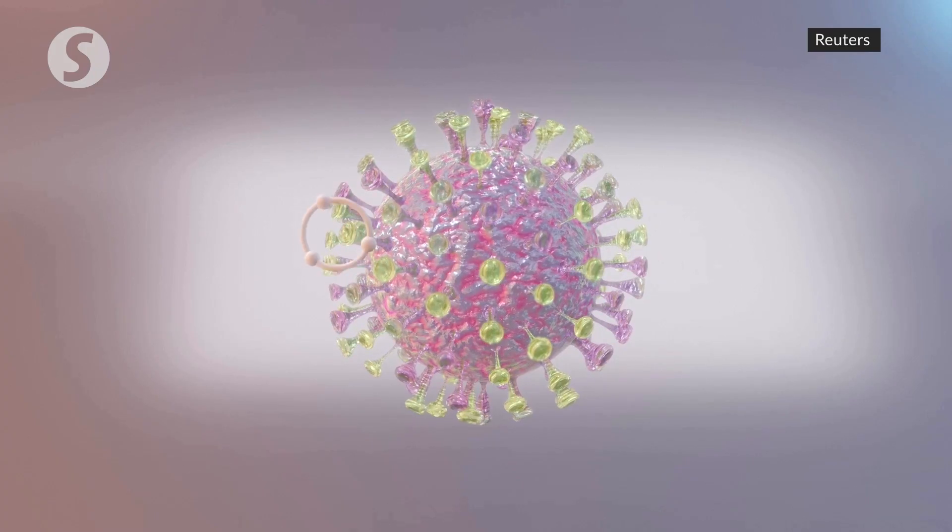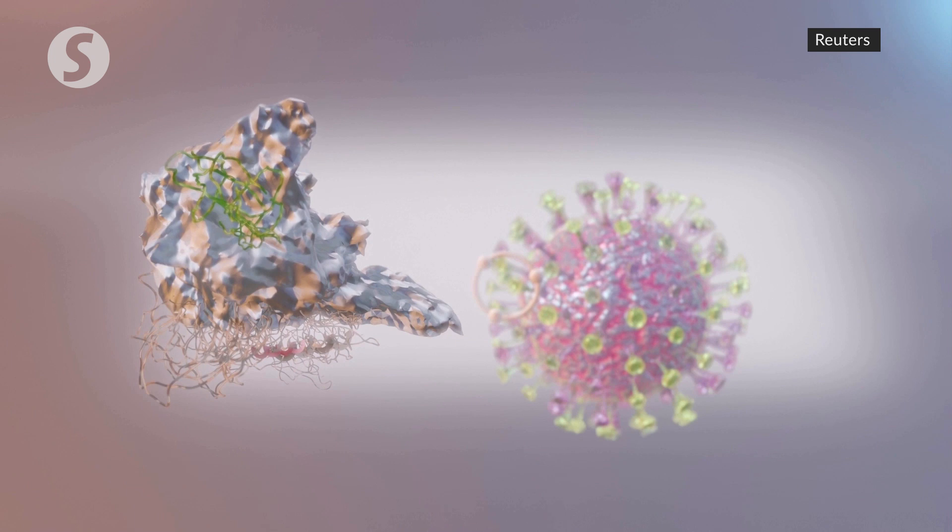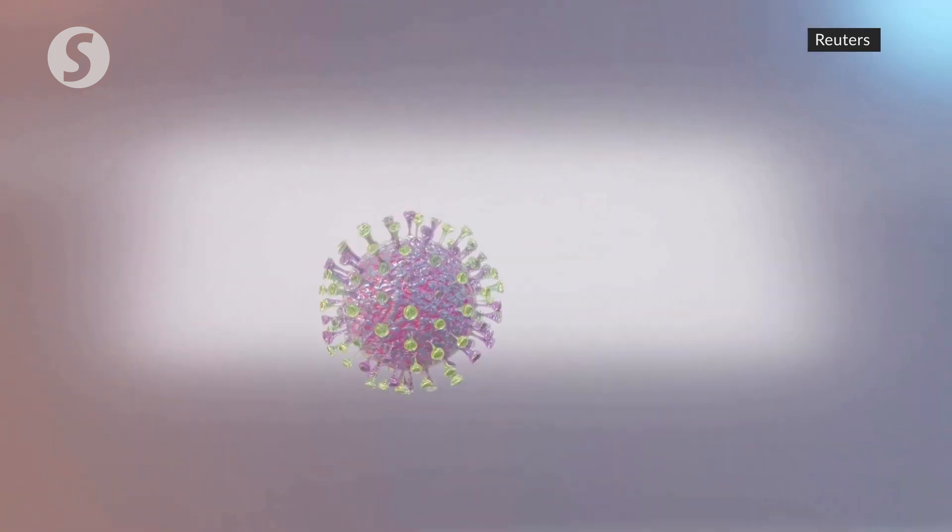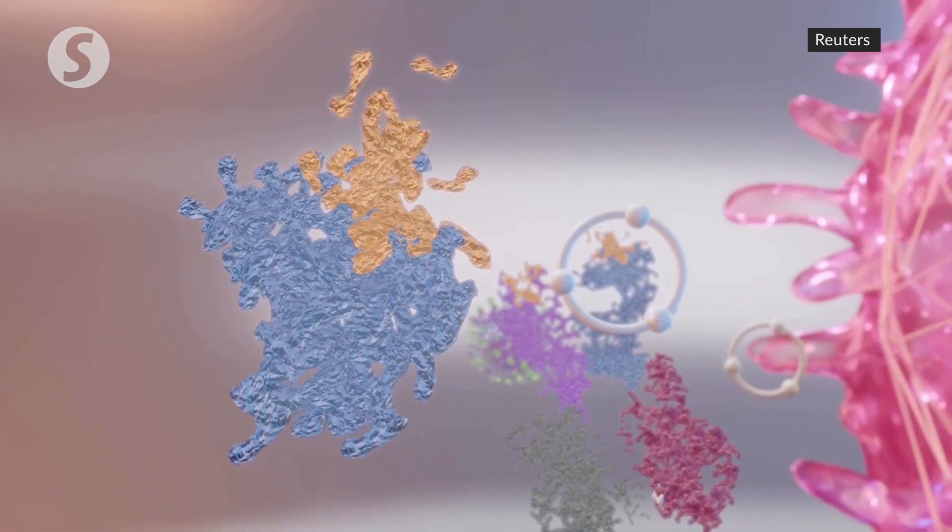A previous study published in Science found the virus spike protein has two receptor binding domains, or RBDs, facing downward and another facing upward. These allow the virus to bind with and invade human cells.